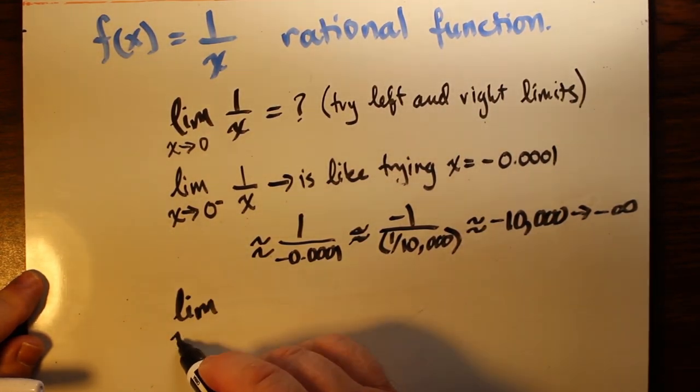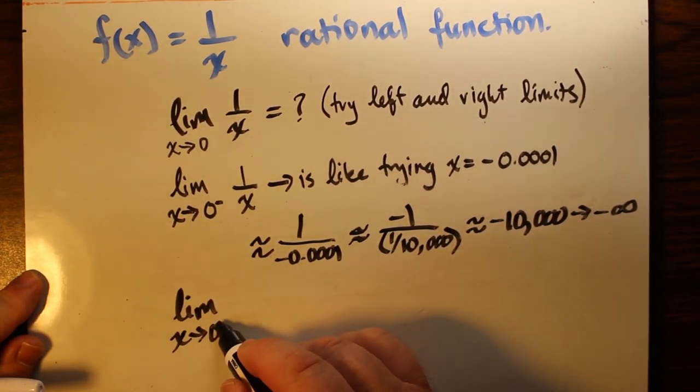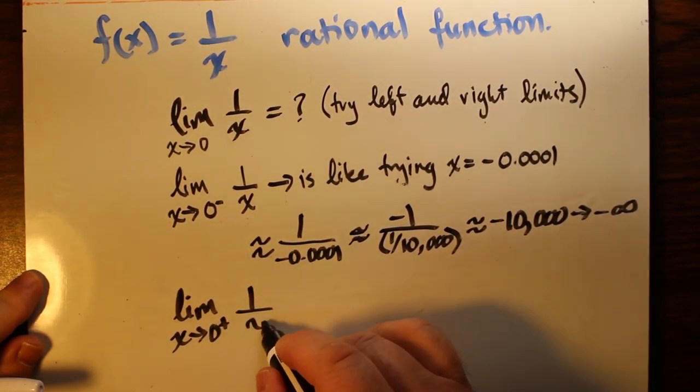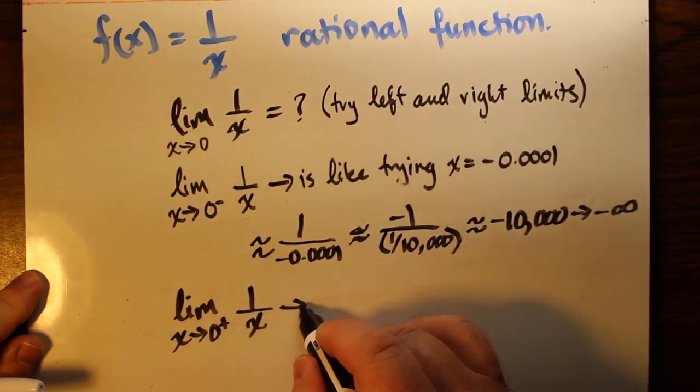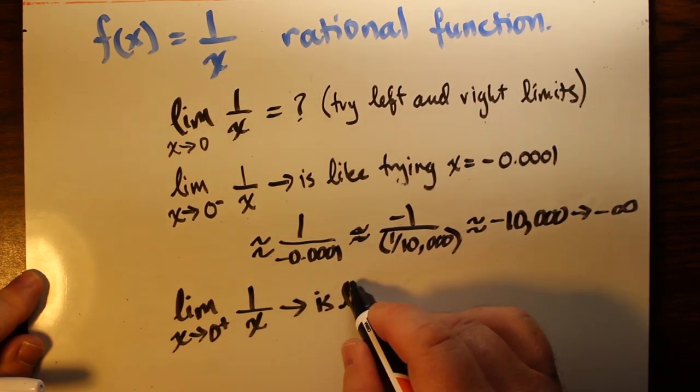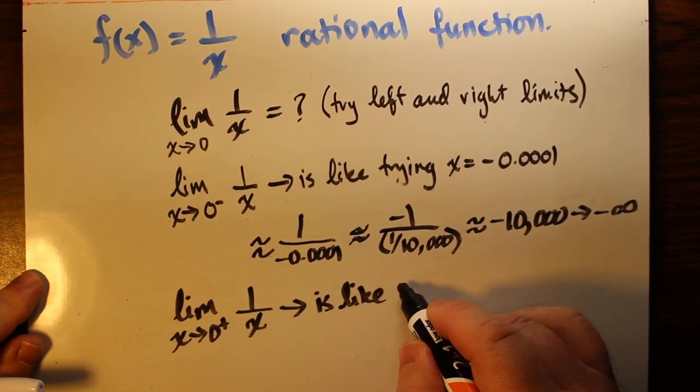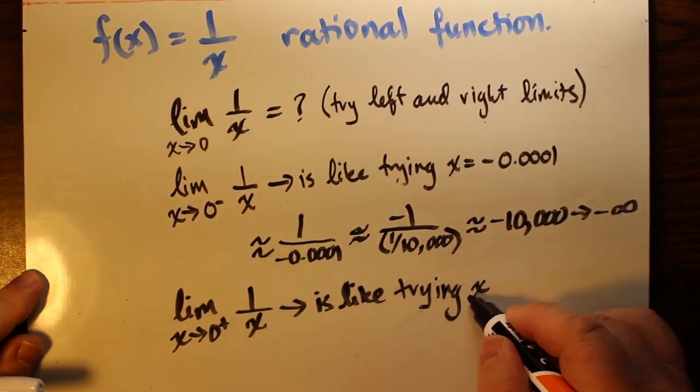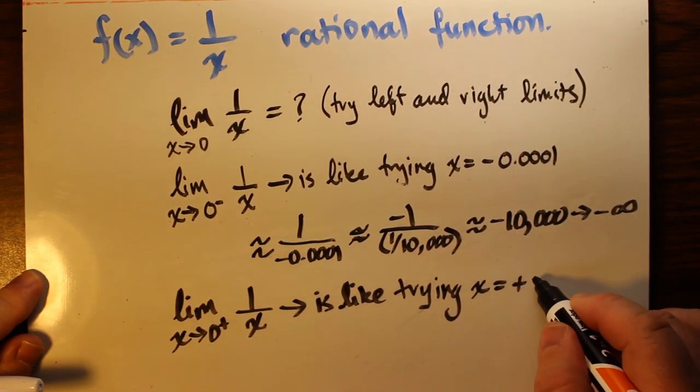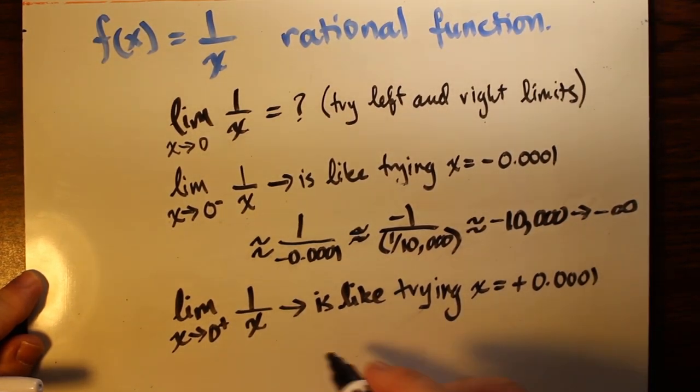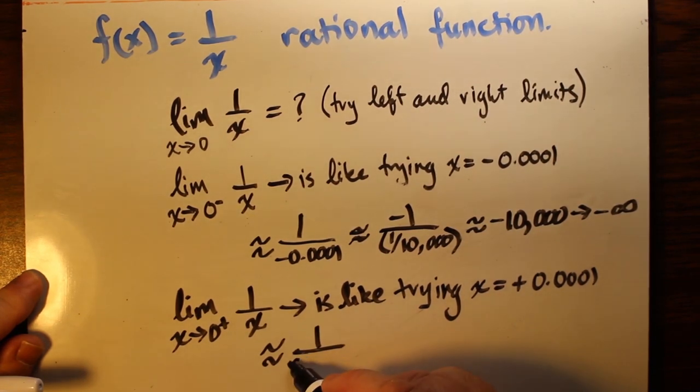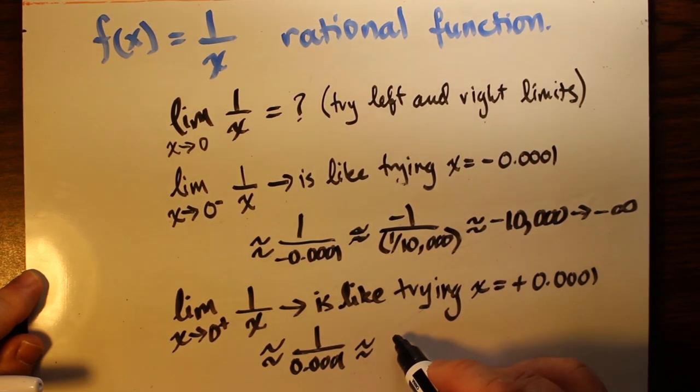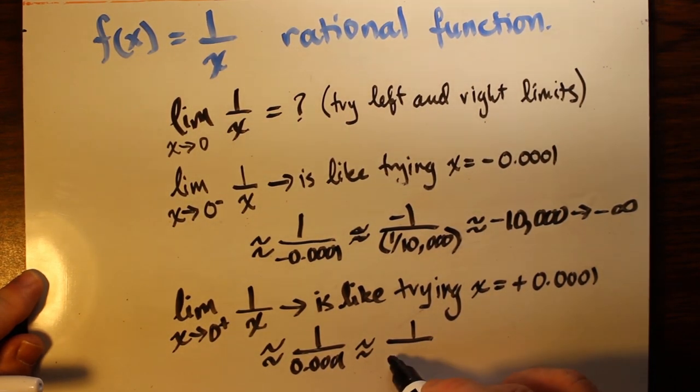Now what about the limit as x approaches zero from the right? That's what it means when you have a plus sign written like an exponent on the zero underneath the limit symbol. This is like trying to substitute x equals 0.0001, super close to zero but on the positive side. If we substitute that in, the math is very similar except for the minus sign.